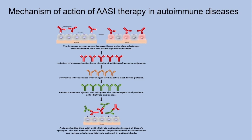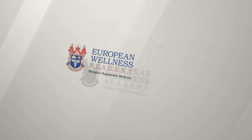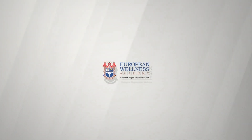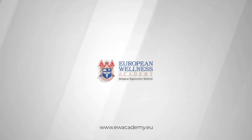This helps to restore a balanced idiotypic network in the patient's body. Maintenance of this equilibrium is essential to ensure that the immune system can effectively fight against exogenous antigens without attacking self-antigens that could potentially lead to the development of autoimmune diseases. In summary, active specific immunotherapy is a promising treatment for autoimmune diseases due to the immunomodulatory potential of anti-idiotypic antibodies.